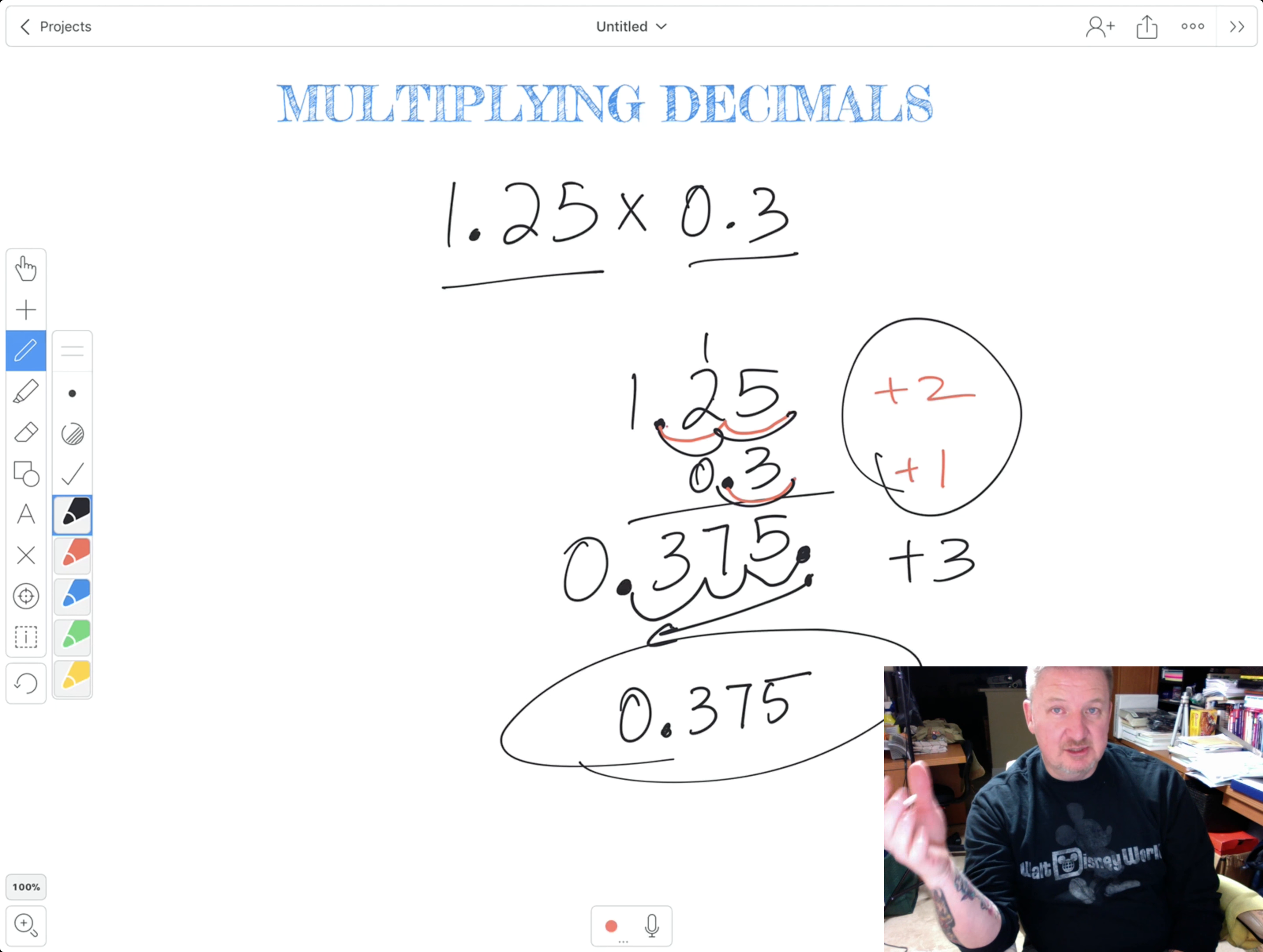Count how many decimal places. Take the total number of decimal places for your factors, the numbers in your multiplication problem. Take the number of decimal places in each of the factors, count them out, get a total for both, and that's how many decimal places your answer has.